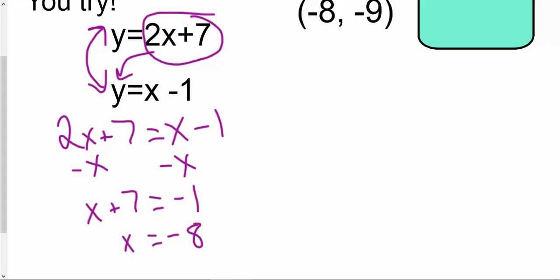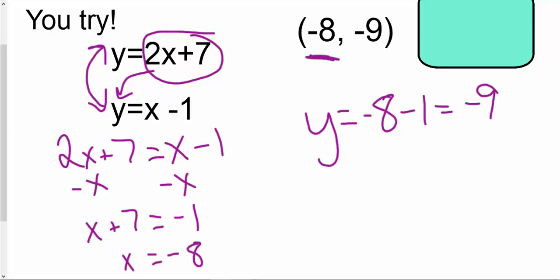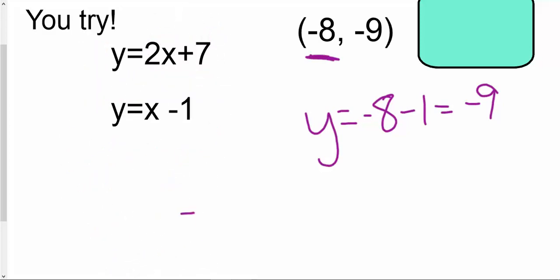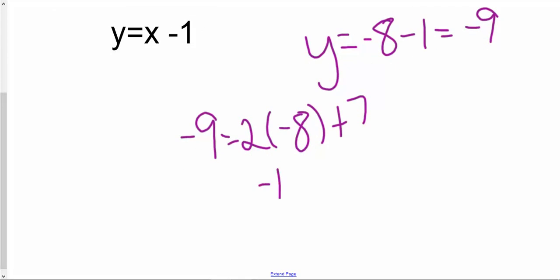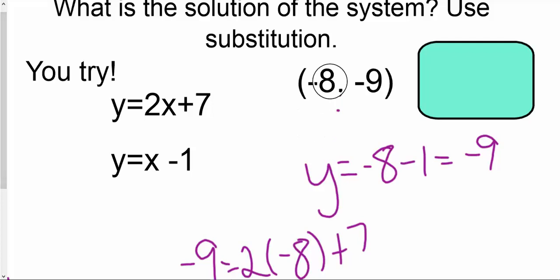We're trying to solve for x. Therefore x plus 7 equals negative 1. Remember, we subtract 7 on both sides, which gives us our x value of negative 8. However, we're not done — we have to plug negative 8 in to figure out the y value. Using the second equation, y equals negative 8 minus 1, which equals negative 9. To double check, plugging back into the top equation: is negative 9 equal to 2 times negative 8 plus 7? Well, 2 times negative 8 is negative 16, plus 7 equals negative 9. Because negative 9 equals negative 9, we are good to go. Our final answer is negative 8 comma negative 9.